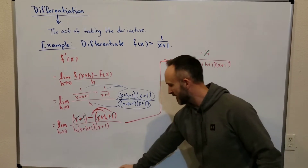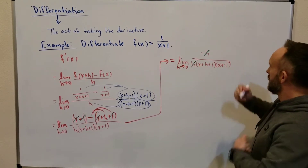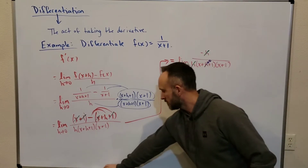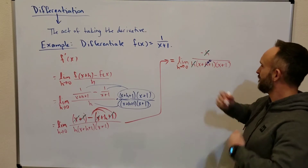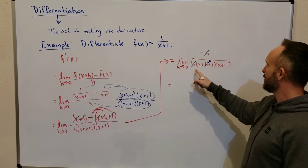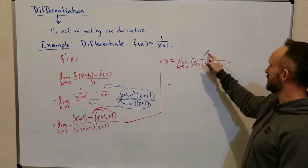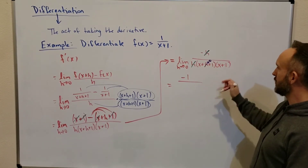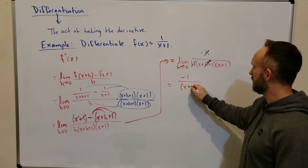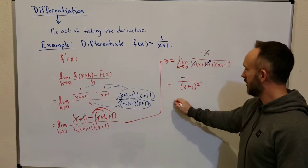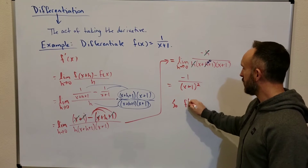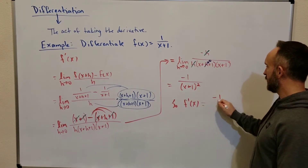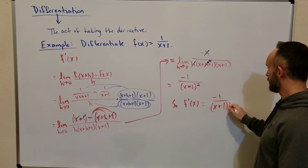So this h is going to turn into 0. We take the limit now — this h goes to 0, so on top we've got negative 1. And on bottom we have (x+1) times another (x+1), which is (x+1)². So the formula for f'(x) is −1/(x+1)².